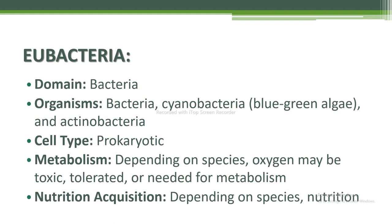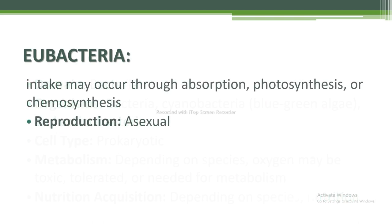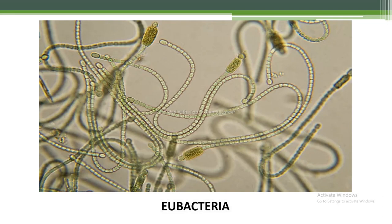Domain is Bacteria. Organisms include bacteria, cyanobacteria (also called blue-green algae), and actinobacteria. Cell type is prokaryotic. Metabolism depends on species — oxygen may be toxic, tolerated, or needed. Nutrition acquisition depends on species and may occur through absorption, photosynthesis, or chemosynthesis. Reproduction is asexual. This is Eubacteria as shown in the figure.